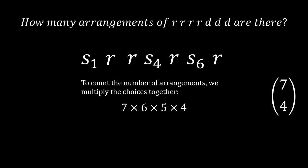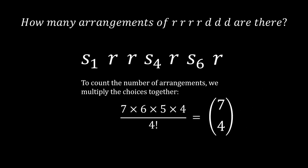So, to count the number of arrangements, we can simply multiply the choices together. However, also notice that there may be overcounts here. Because, well, if we swap the r's around, this would result in a new arrangement. But, in reality, it's not a new arrangement, so we must divide by 4 factorial. This is given by 7 choose 4.